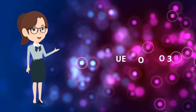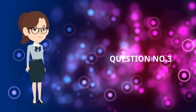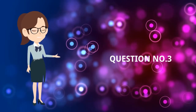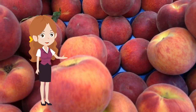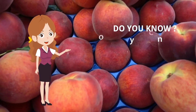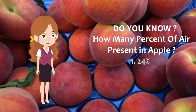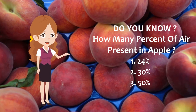Genius, now we are at the intermediate level question part. In this level you need to face two questions which are a little bit harder than the basic level. Your third question is: do you know how many percent of air is present in an apple? The options are: Option 1 is 24, Option 2 is 30, Option 3 is 50, and Option 4 is 75. Try to guess the answer before time runs out.